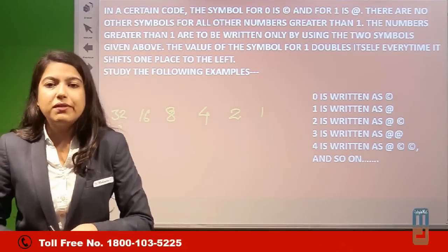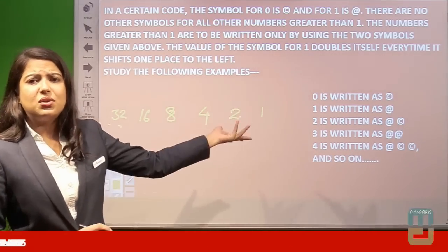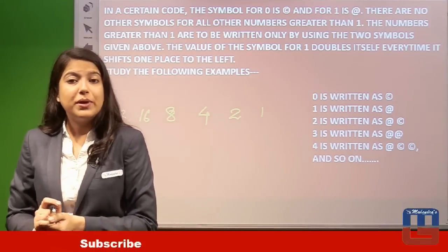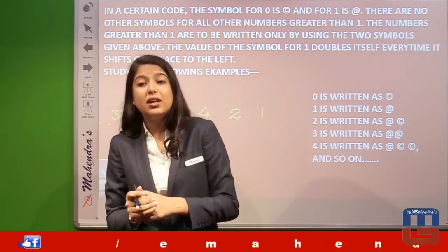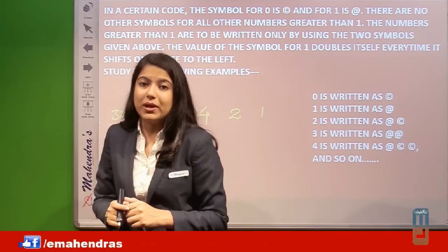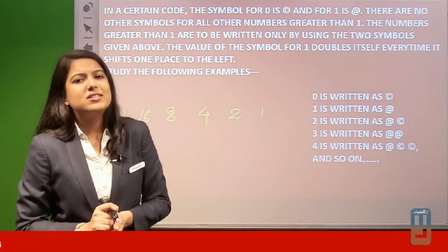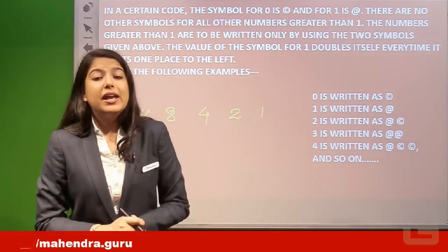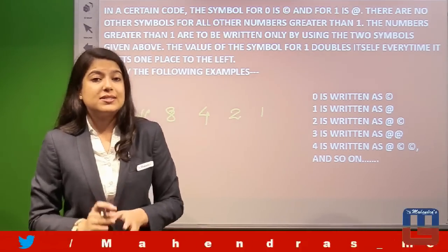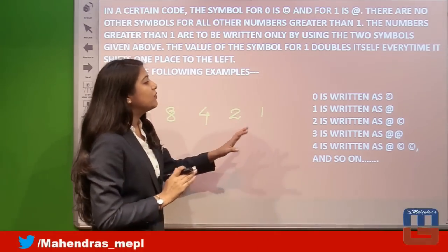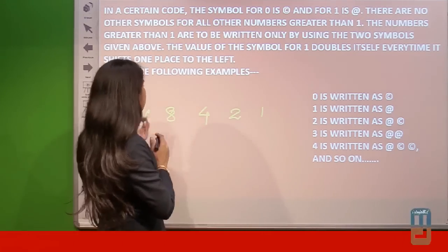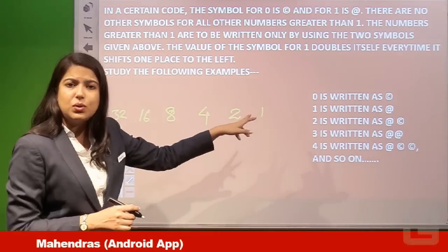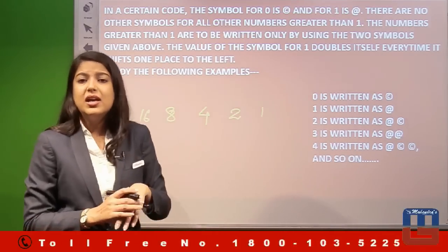The examples given are: 0 is written as ©, 1 as @, 2 as @©, 3 as @@, 4 as @©© and so on for 5, 6, 7, 8. For 2, we use the series values 2 and 1: 2 is utilized so it's @, and 1 is not utilized so it's ©, giving @©.